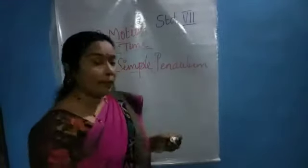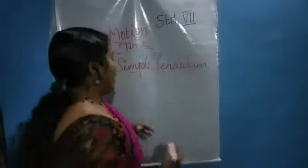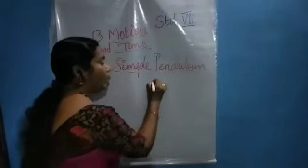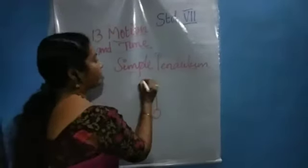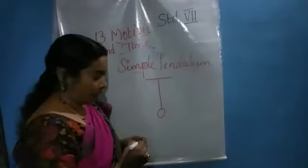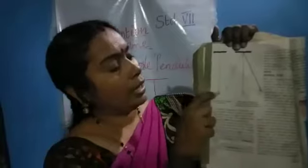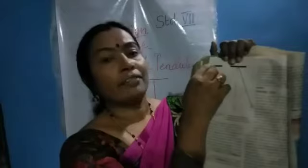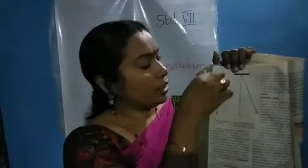The simple pendulum arrangement is very simple, like its name. There will be a metal ball which is connected with a string or thread and fixed to a rigid body. It is given in your textbook, page number 146 — the metal ball connected with a string or thread and fixed to a rigid body. This arrangement is called a simple pendulum.